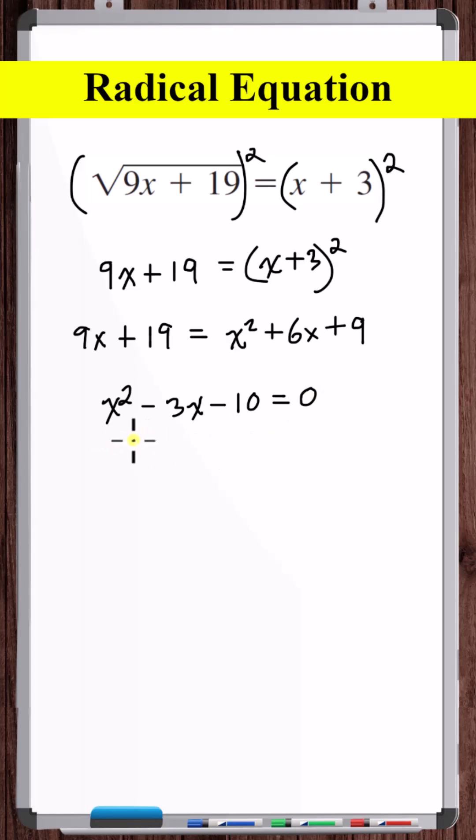Now let's solve this quadratic equation. We can factor this. Minus 5 plus 2 is minus 3 and minus 5 times 2 is minus 10. So x is equal to 5 and x is equal to minus 2.